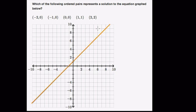They're asking which of the following ordered pairs represent a solution to the equation graphed below. These ordered pairs are points, and the line they're referring to is the one they have graphed. One way you can tell if a point is a solution for a line is to see if the point is on that line.